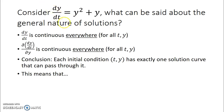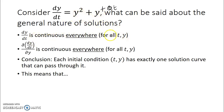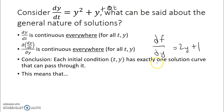Now consider dy/dt equals y squared plus y. What can be said about the general nature of solutions? You can plug in any value of y — it's not dependent on t, so you can write plus 0t if that helps. You can square any number and add any number to a squared number. Therefore dy/dt is continuous everywhere. The partial derivative is 2y plus 1, which is also continuous everywhere. This means each initial condition (t, y) has exactly one solution curve passing through it.